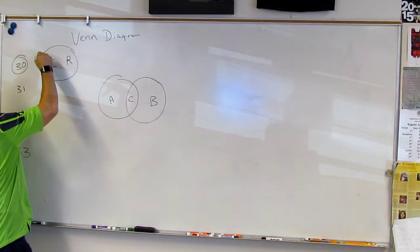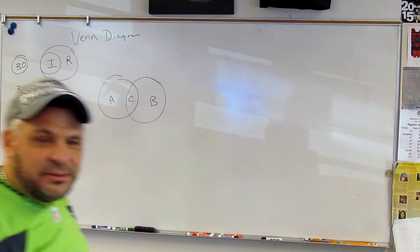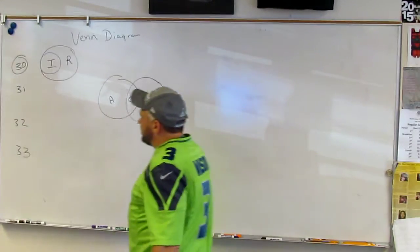So it looks like this. So it's a little circle inside a big circle. All right. 31.